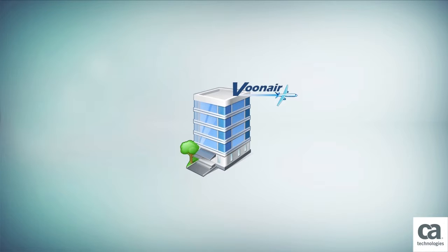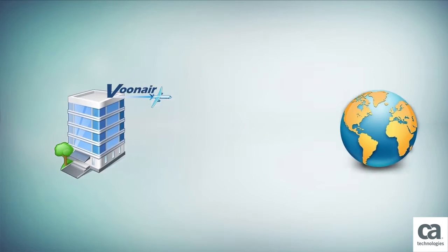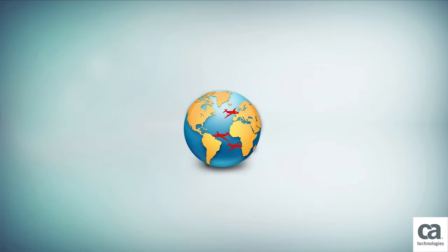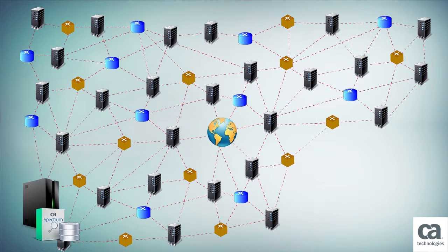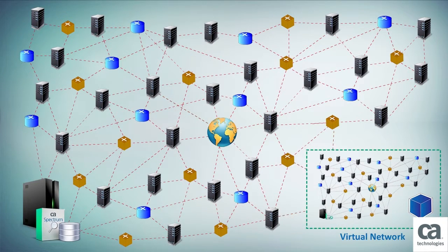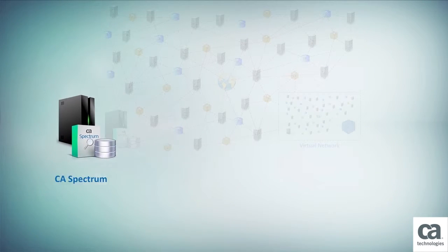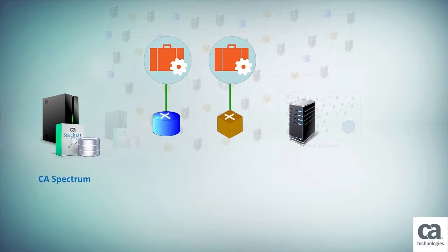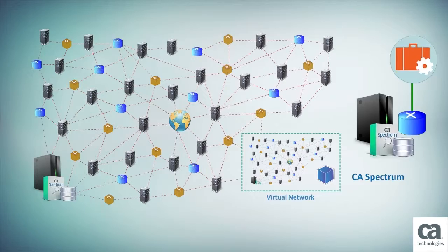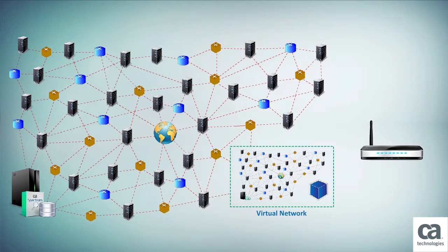Bunaire Airlines is one of the largest airline companies in the world. They operate flights to all major tourist destinations and have a large IT environment to support their business. They have implemented CA Spectrum to monitor and manage relationships between their IT assets and associated business services. Bunaire Airlines plans to buy new routers to upgrade its IT infrastructure.